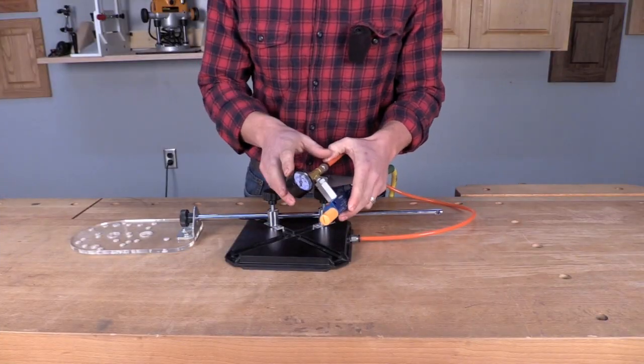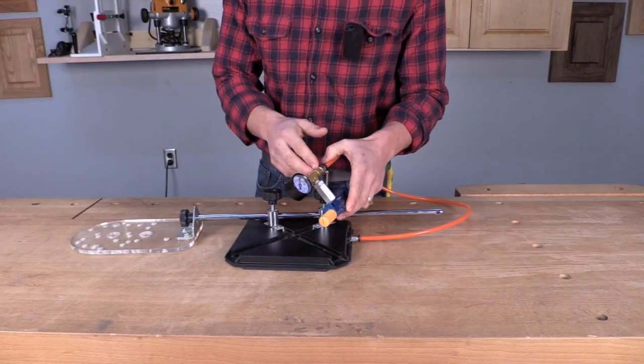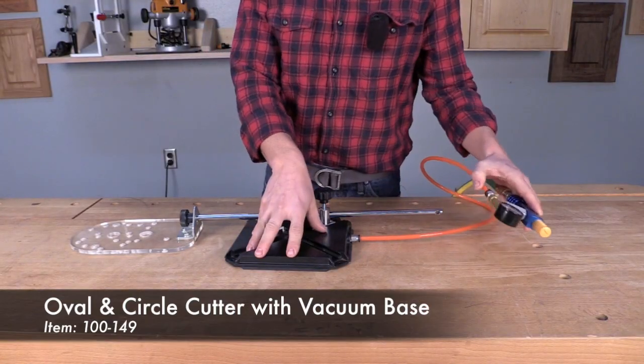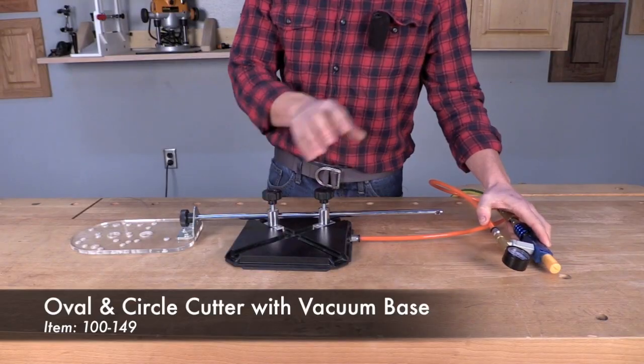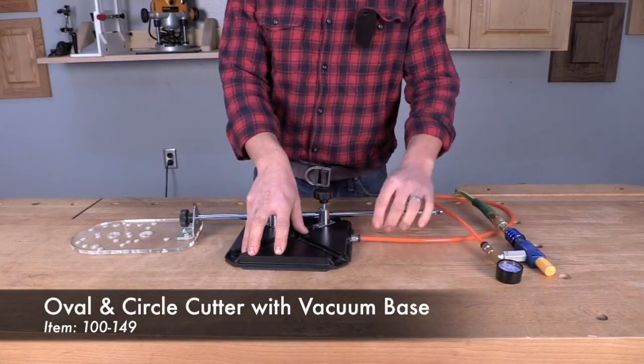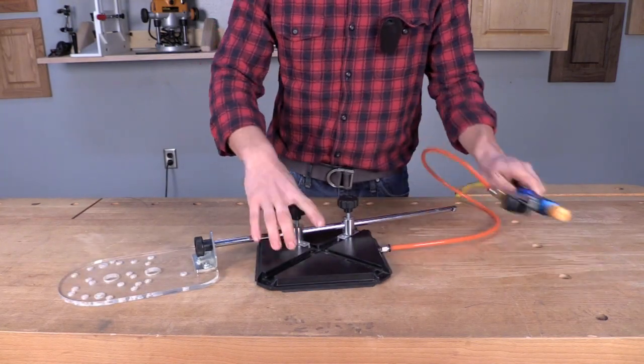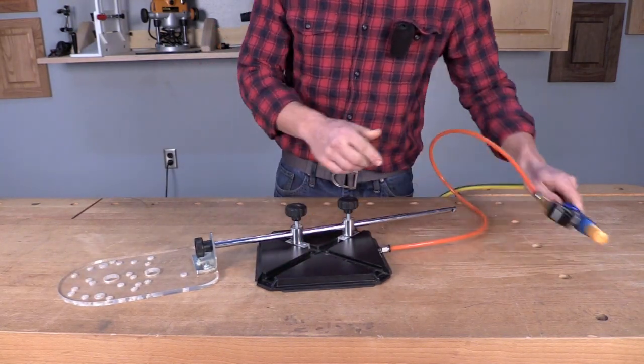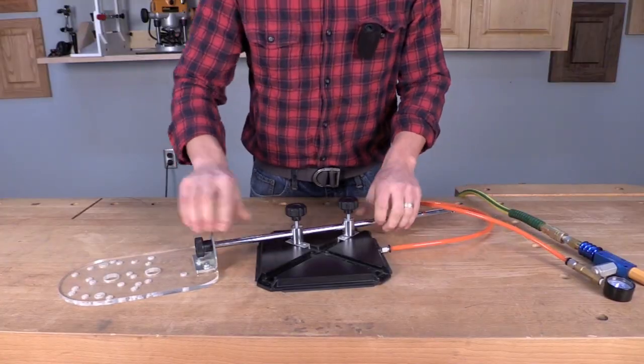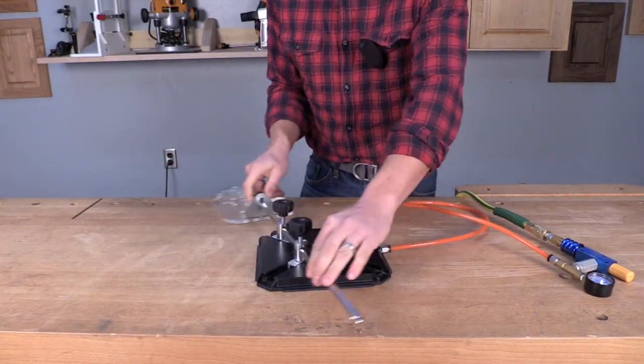One of my favorite uses for the Venturi vacuum switch here in the Infinity Tool Shop is with the oval and circle cutter with vacuum base. To use these tools together, all I have to do is connect my 8 millimeter hose from my Venturi to the base of the oval and circle cutter. Then, flip the switch on the Venturi and use the oval and circle cutter to cut whatever shape I need for my project.